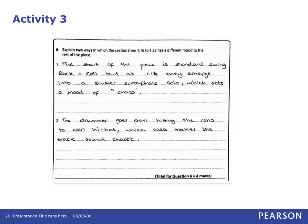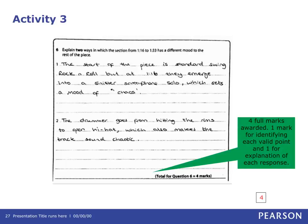Activity 4 refers to Question 6 from Section A. The question reads: 'Explain two ways in which the section from 1 minute 16 to 1 minute 33 has a different mood to the rest of the piece.' This is a detailed response where the learner has achieved full marks — one mark for identifying a valid point and a further one mark for an explanation of how this has a different mood to the rest of the piece, for each response.